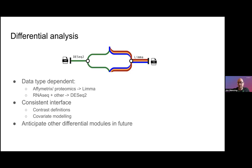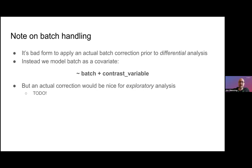Just a note on batch handling. It's bad form in the analysis to do an actual batch correction prior to differential analysis. Instead we model batches as a covariate as part of the differential analysis using models that look a bit like this in DESeq2 or in limma. But it would be nice to have an actual batch correction in place to help with exploratory analysis, so for example when you're doing PCAs to remove the effects of that batch in doing that PCA. We don't currently have that, but we do plan on doing that at some point in the future.